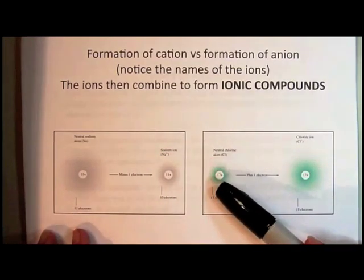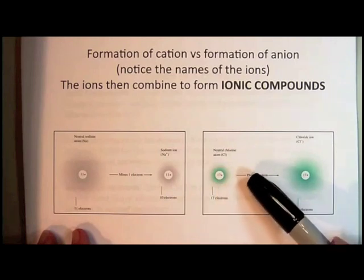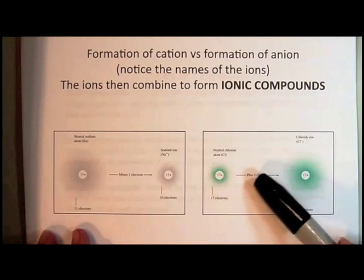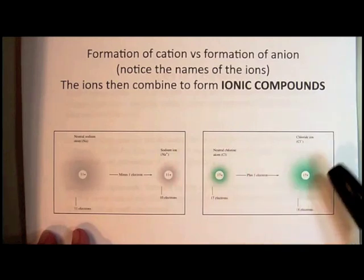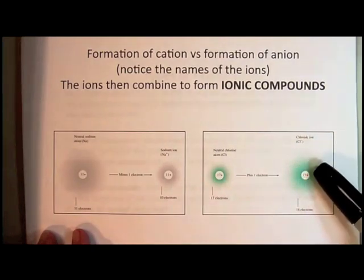For a chlorine atom, normally has 17 protons and 17 electrons. What happens when the ion is formed is that the chlorine picks up one electron to form what's called the chloride ion. And it has a minus one charge. So it now has 18 electrons and 17 protons.